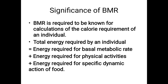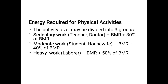Energy required for physical activities is divided into three groups: heavy workers like laborers working in factories, moderate workers like housewives, and sedentary workers who work less. Sedentary workers require BMR plus 30% of BMR. Moderate workers require BMR plus 40% of BMR. Heavy workers require BMR plus 50% of BMR.